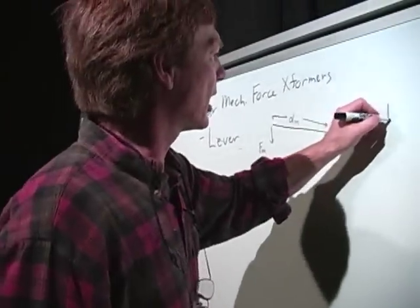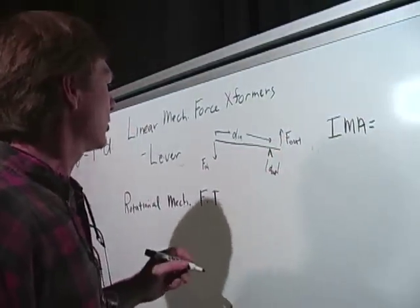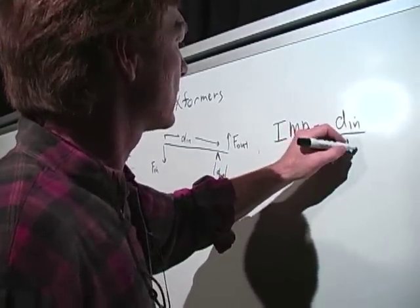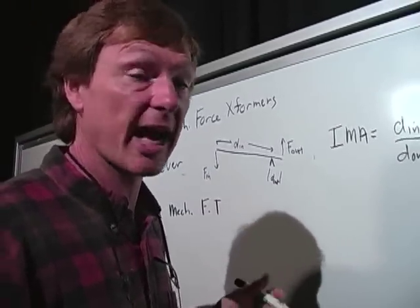the ideal mechanical advantage, I'll call it IMA, is equal to the distance in over the distance out. Right? And you can measure that. You just measure the distance, you don't have to run it. But if you run it, you can get the actual.